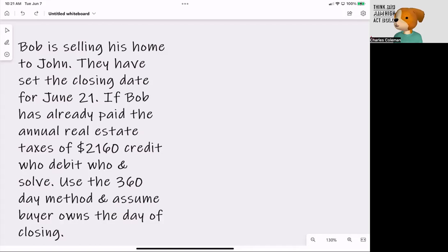All right. So a couple of key things that we're going to pull out of here. We're going to look at the very first thing being that Bob already paid. That's going to be one of the big things. The second big thing in here is that is a 360-day calendar that we're working on and the buyer, John, owns the day of closing.